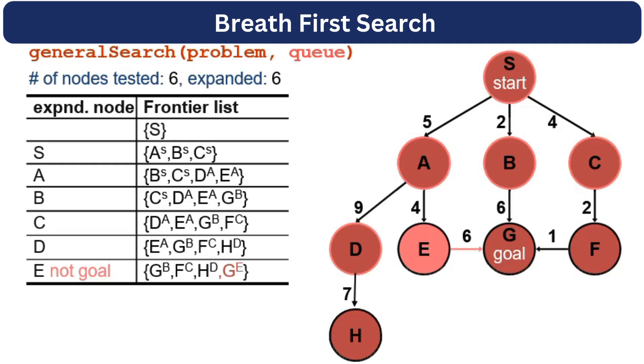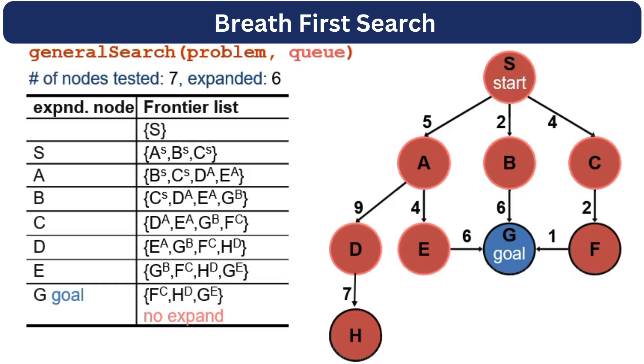The next node in our queue is G with the parent B. We will explore it and test if it is a goal node. Yes, it is a goal node, and here we stop our algorithm.